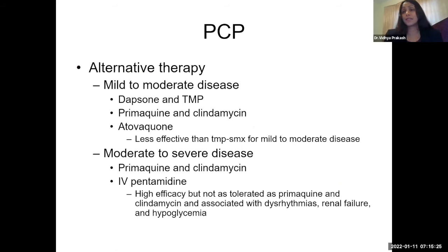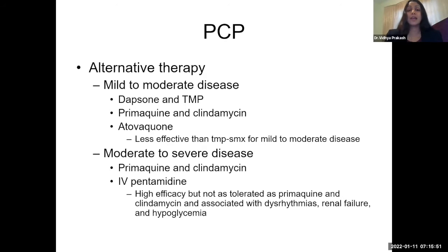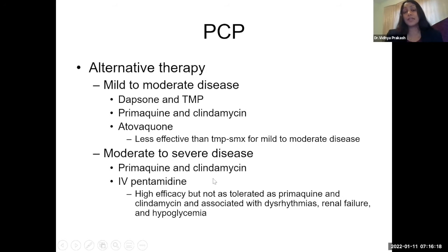Alternatives if the patient has anaphylaxis to Bactrim: for mild to moderate disease, you can use a combination of dapsone and trimethoprim. Other alternatives include primaquine plus clindamycin and atovaquone, though atovaquone is not as good as Bactrim for mild to moderate disease. For moderate to severe disease, do not use atovaquone — use primaquine and clindamycin, or as a last resort, IV pentamidine. Pentamidine is not as well tolerated and has many side effects including dysrhythmias, hypoglycemia, and acute kidney injury.